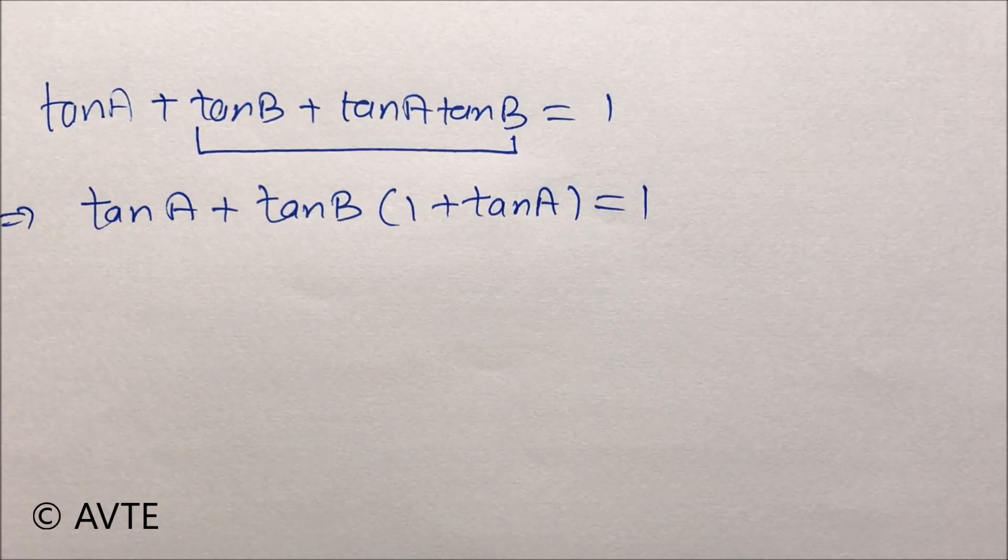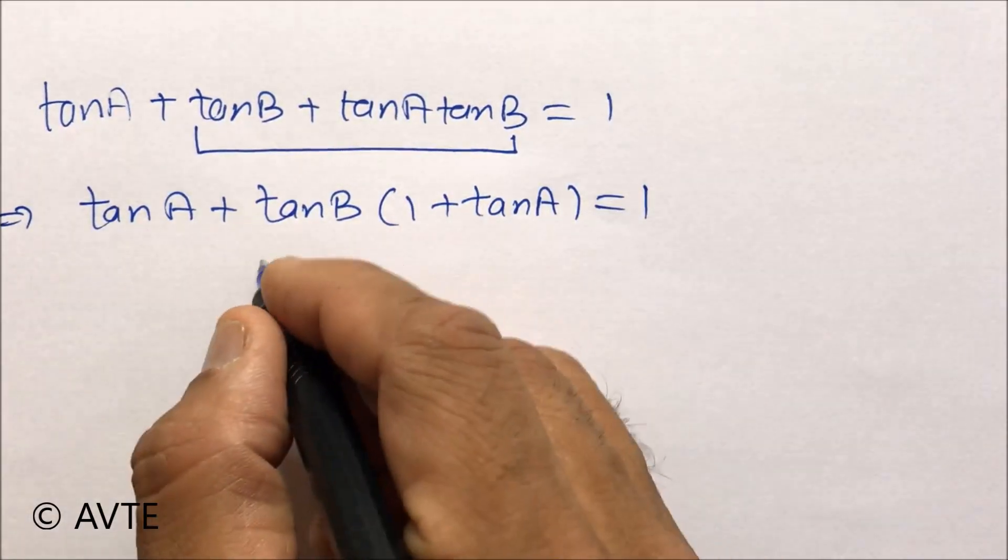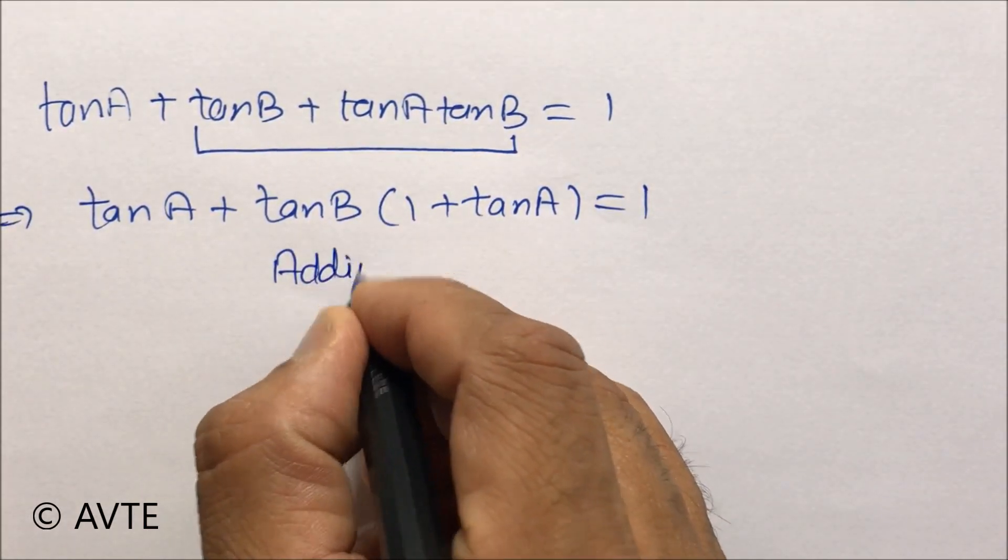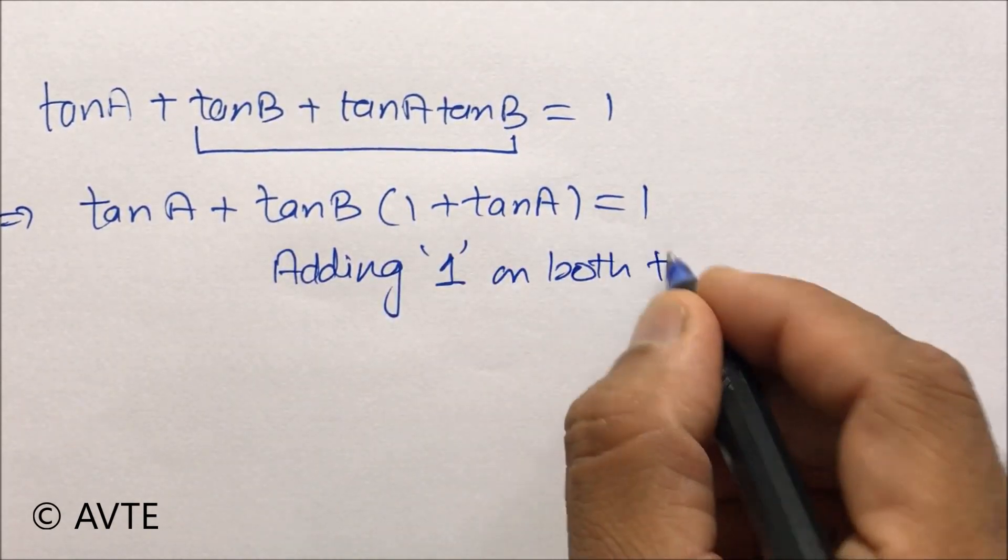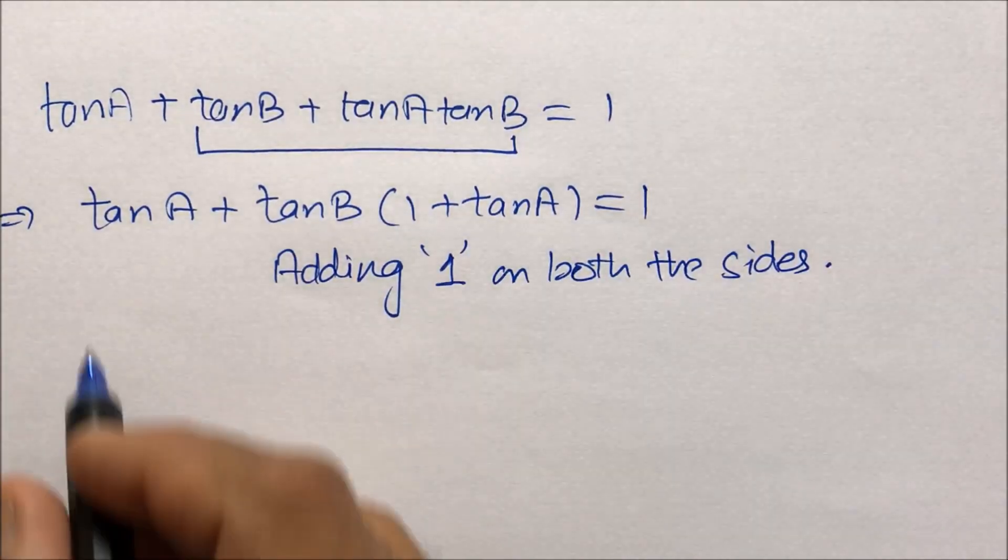Since we need 2 on the right-hand side, we are adding 1 on both the sides.